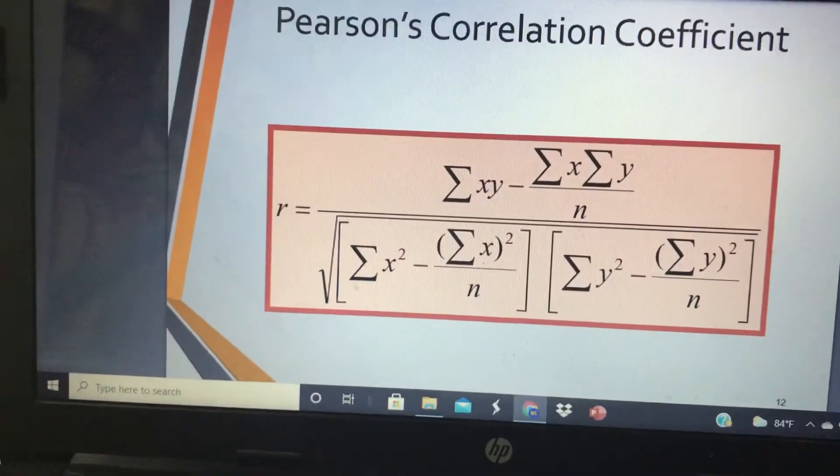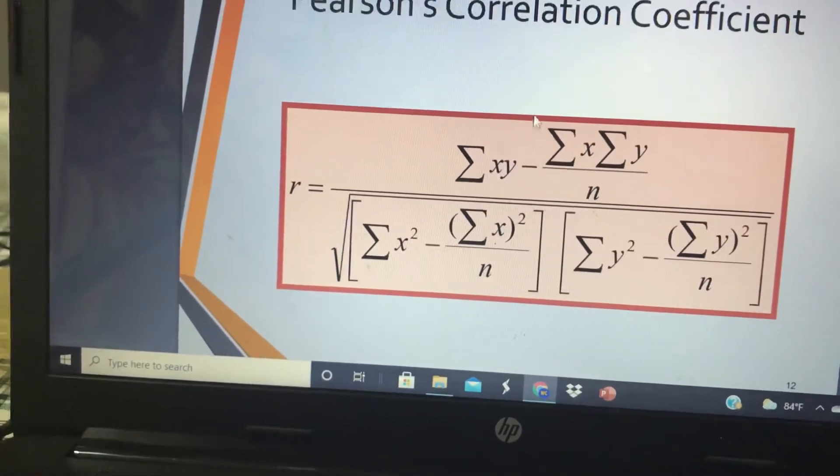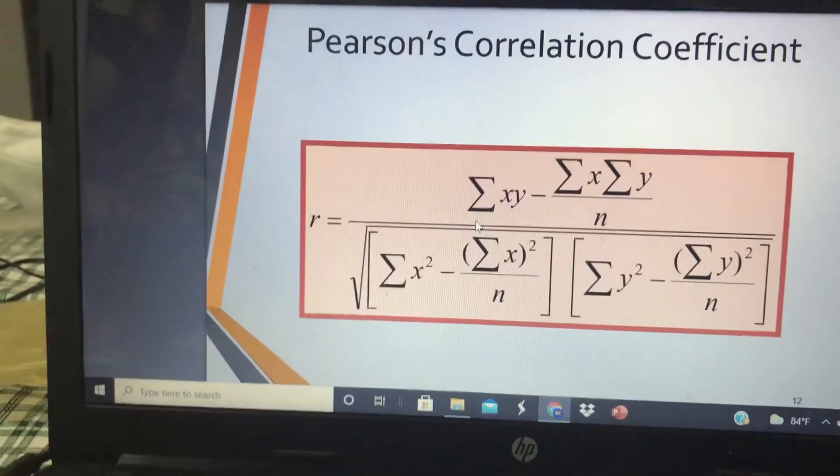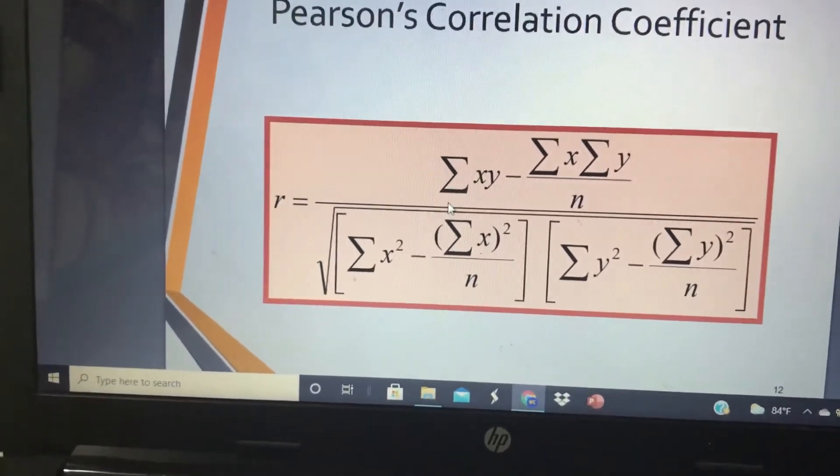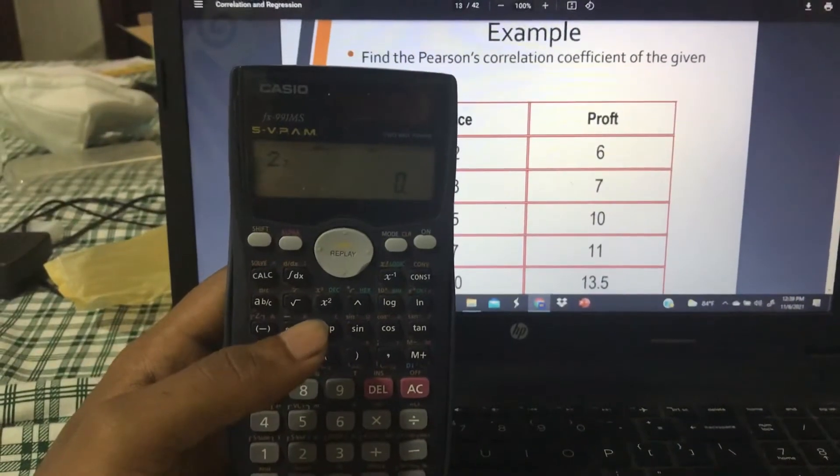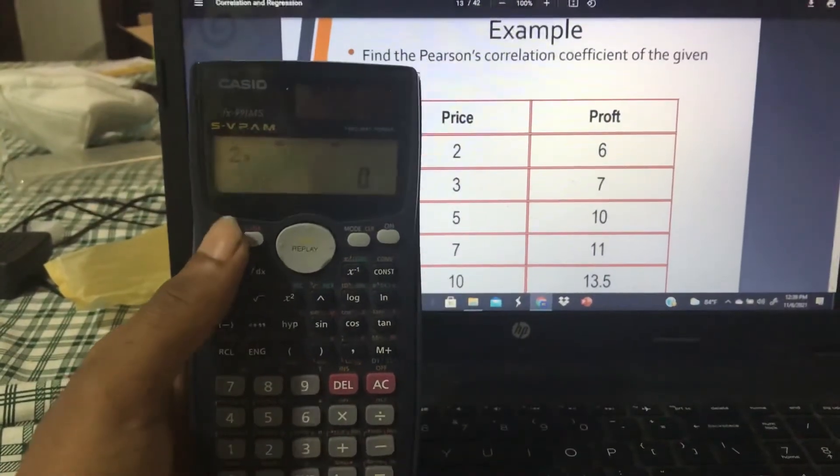But this is a long process because you have to find the Sigma XY value and Sigma X, Y square value. This is a long process, but I will show you how you can calculate correlation coefficient using a scientific calculator very easily. Here I am using Casio FX-991MX calculator.